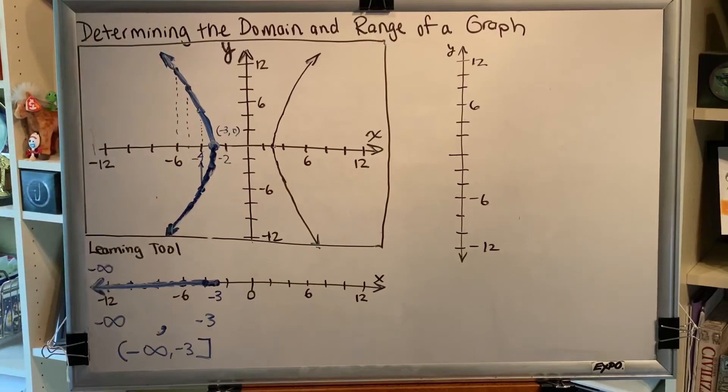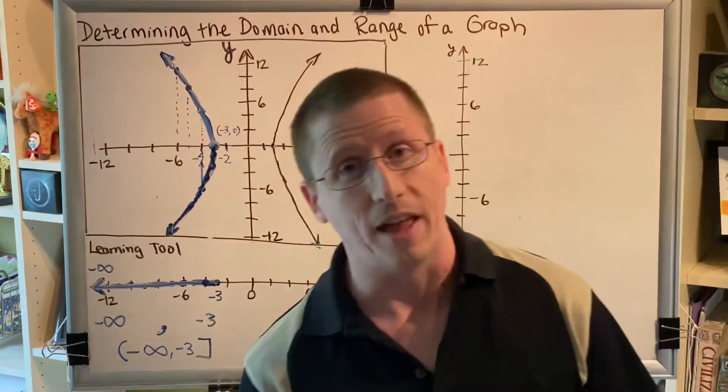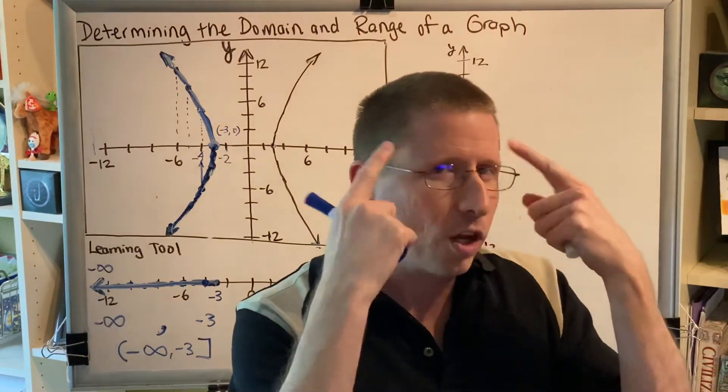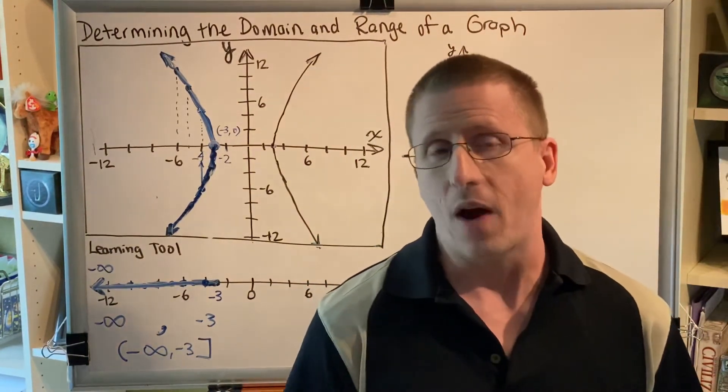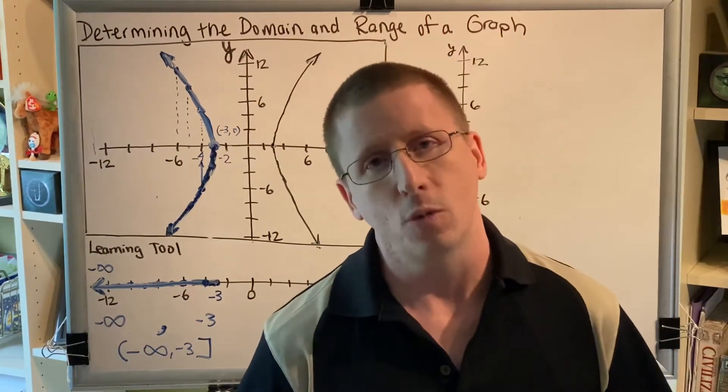If you're looking for domain, you're looking for x. x measures how far a graph goes left or right. So if you want to know the domain, what you really are asking yourself is, how far does this graph go to the left? How far does this graph go to the right? And are there any gaps in between?